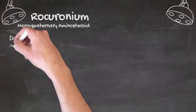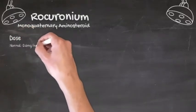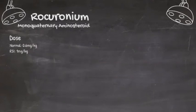The normal dose of rock is 0.6mg per kilogram and that will achieve intubating conditions in about 2 minutes. But the RSI dose of rock is 1mg per kilogram and that will achieve intubating conditions in 1 minute.